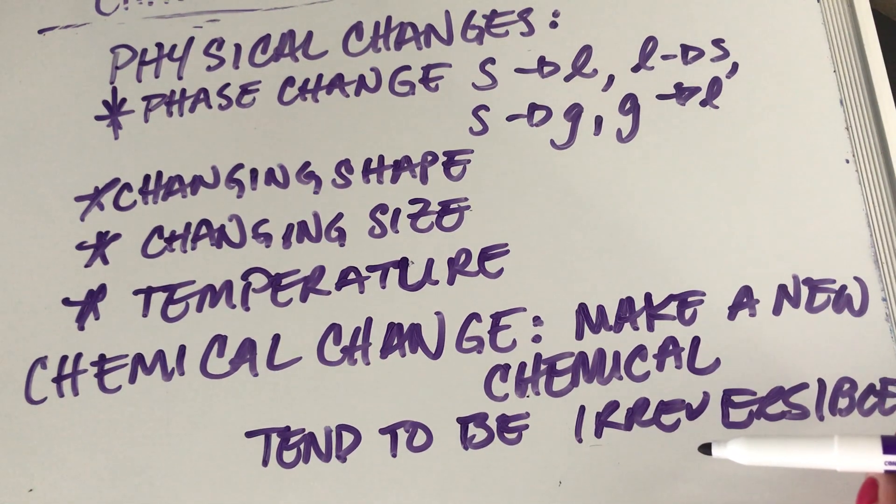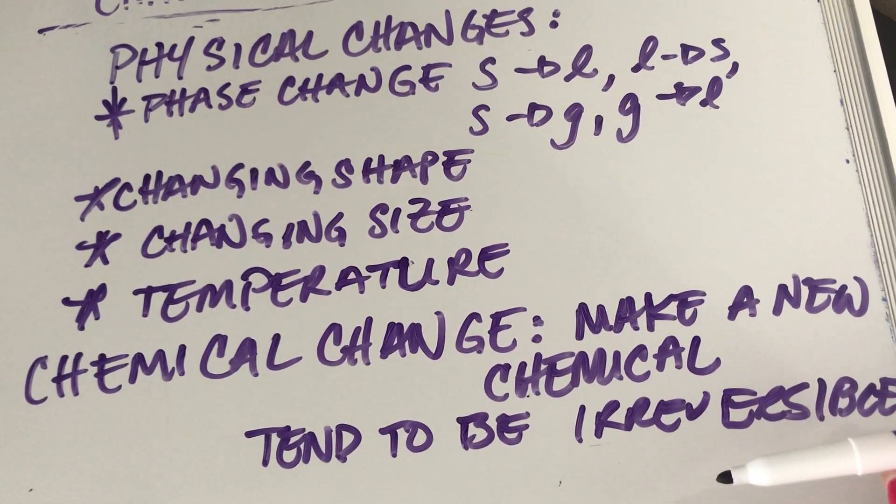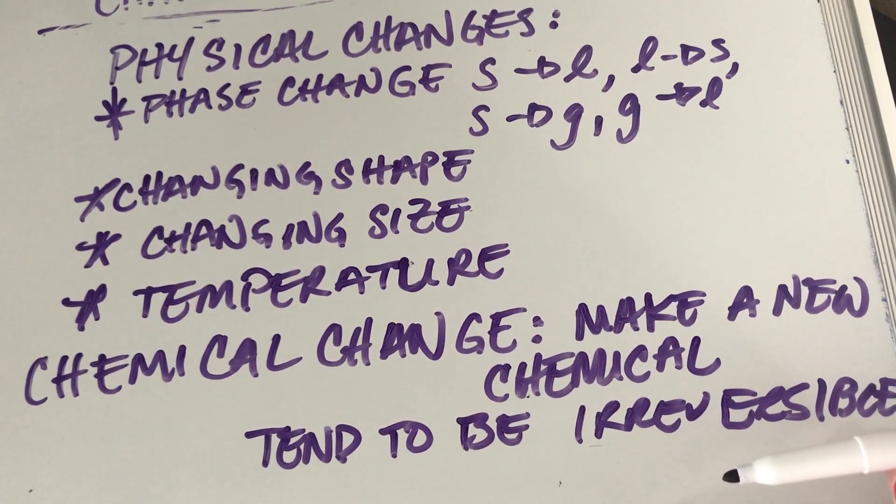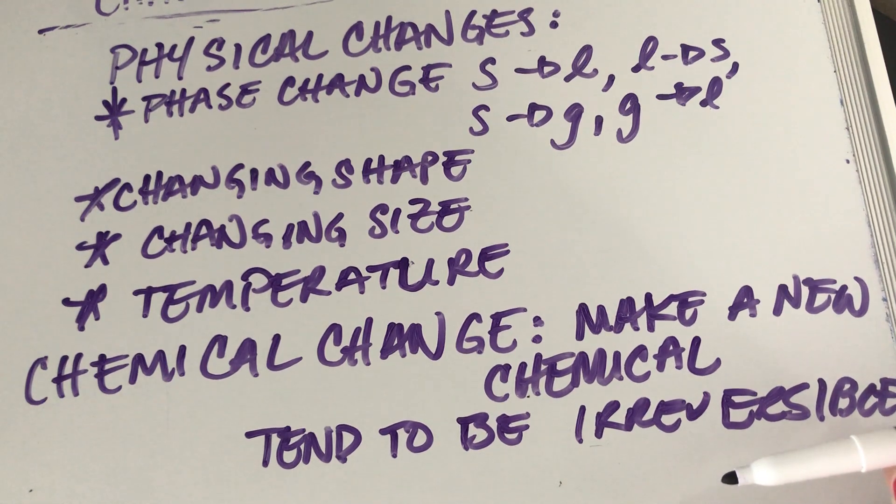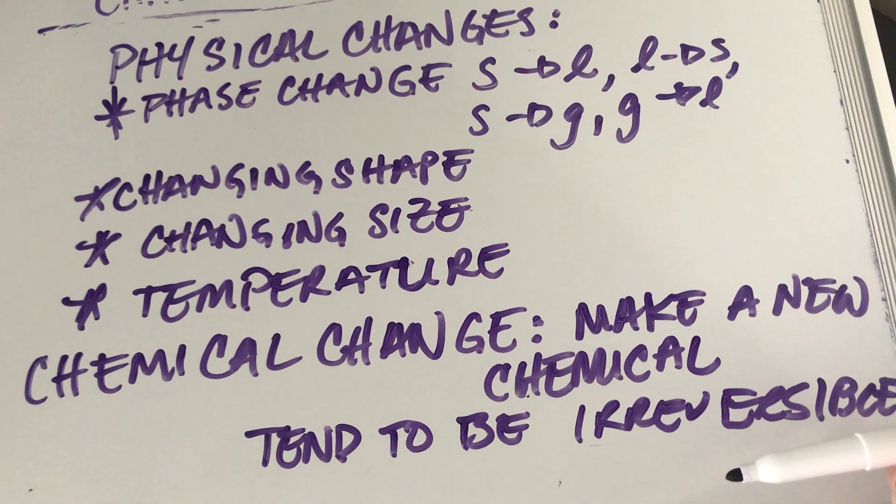So a physical change doesn't change the composition of the substance that you're working with. A chemical change always does. Does that make sense, guys? You want a couple more examples? Yeah, please. So another example of a chemical change would be eating food. You can't unmetabolize food. Does that make sense? You eat the food, it goes in your body, it starts going through a bunch of chemical processes that take energy and give it to your body to do all of these other biological processes, but you can't uneat the food.